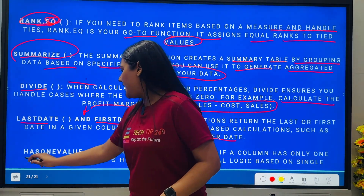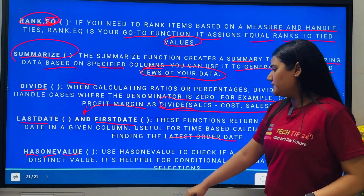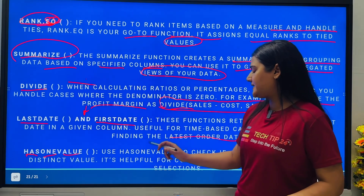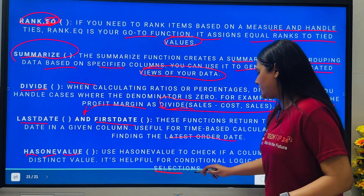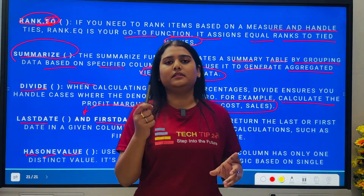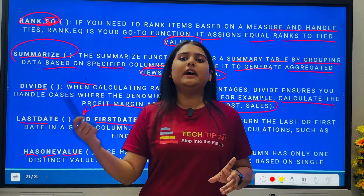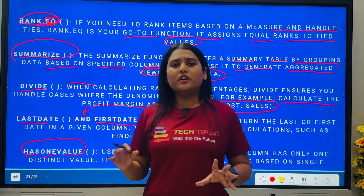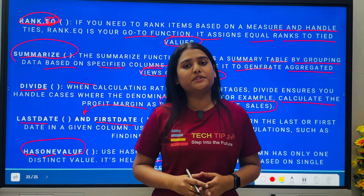Finally, we have HASONEVALUE. Use HASONEVALUE to check if a column has only one distinct value — it's helpful for conditional logic based on a single selection. For example, if any column has only one unique value, HASONEVALUE can be useful. These are simple DAX functions but very useful in real projects and real-time scenarios.